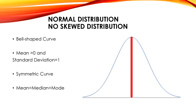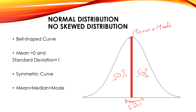Starting with normal distribution, which is also called a no-skewed distribution because there is no skewness. Normal distribution is a bell-shaped curve. In normal distribution, mean is zero and standard deviation is one. Normal distribution is a symmetrical curve — 50% of the data lies on either side. Mean is equal to median is equal to mode in case of normal distribution.